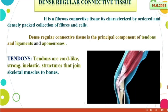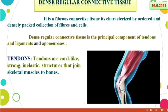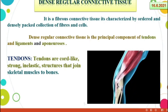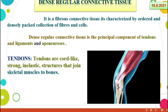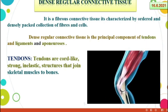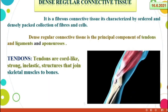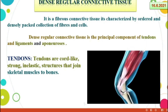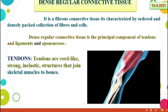Dense regular connective tissue. It is a fibrous connective tissue characterized by ordered and densely packed collection of fibers and cells. Dense regular connective tissue is the principal component of tendons, ligaments, and aponeurosis.